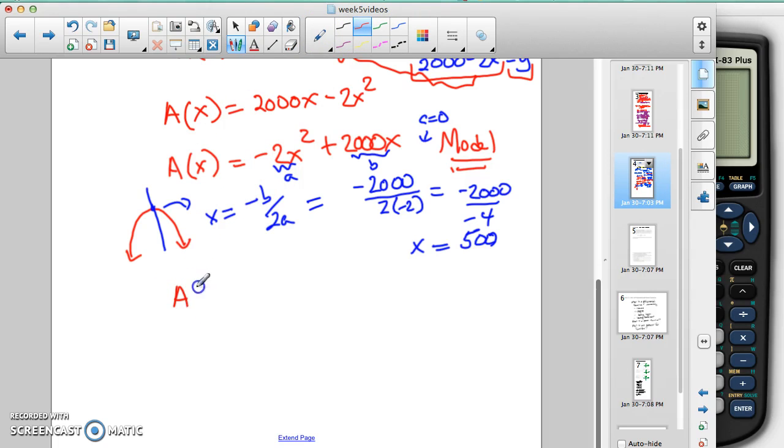We can now use that function or we can plug it into this area function. Either way, we can use A of 500 equals negative 2 times 500 squared plus 2,000 times 500.